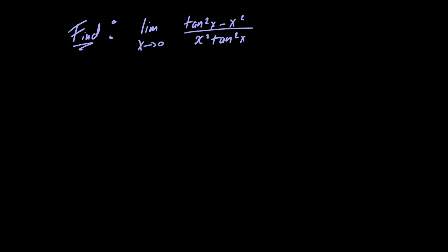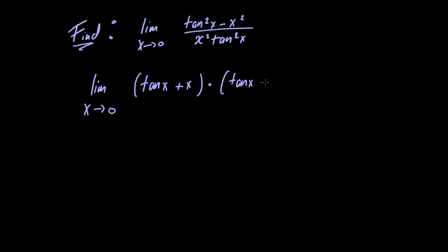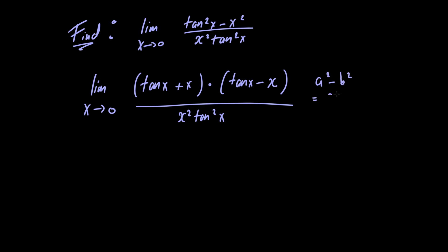Let's begin by rewriting the numerator using the difference of squares formula. The limit as x approaches 0 of tangent of x plus x, multiplied by tangent of x minus x, divided by x squared times tangent squared of x. We used the formula a squared minus b squared equals a plus b times a minus b.